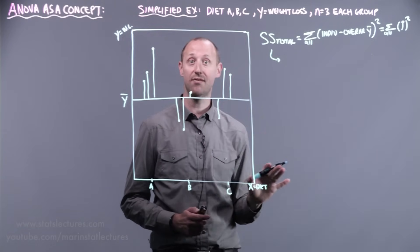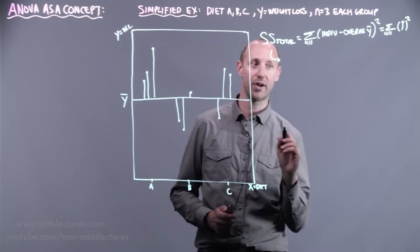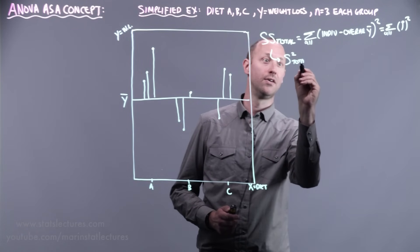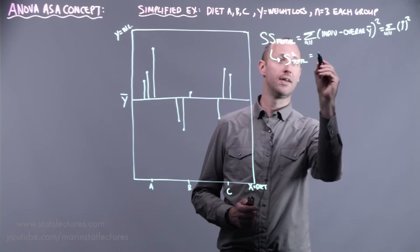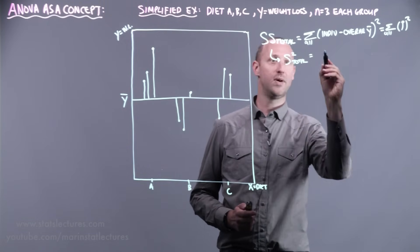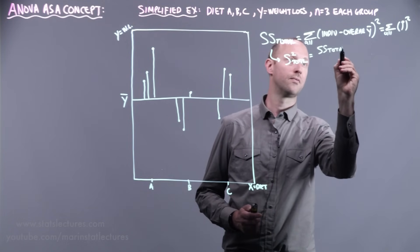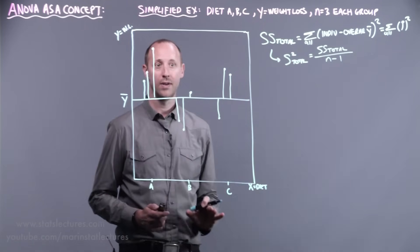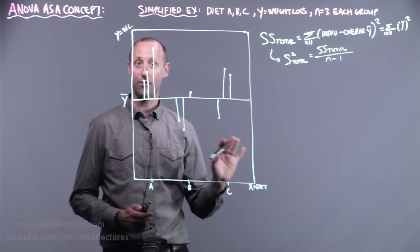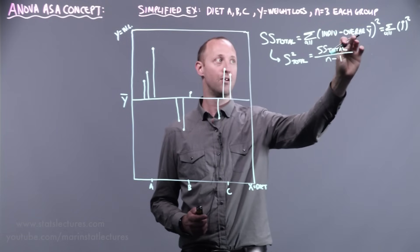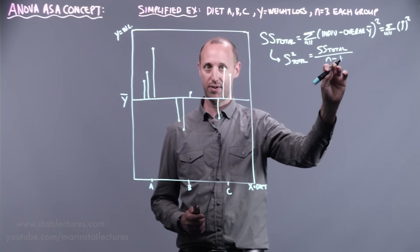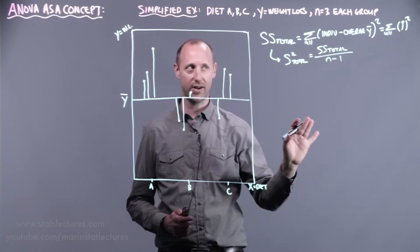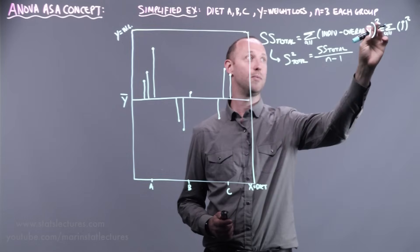This gives us the total variability in y, or total variability in weight loss. The sample variance for the total — s² — is the sum of squares total divided by its degrees of freedom, n minus 1. The top half of the variance formula is what gets called the sum of squares — we're summing up a bunch of squared deviations. So we're going to analyze the total variability and separate it into a few different parts.